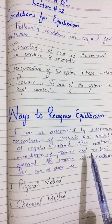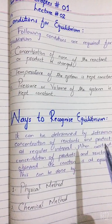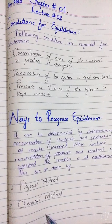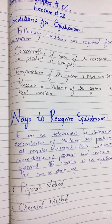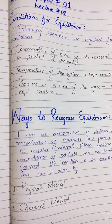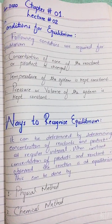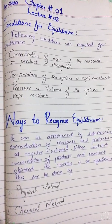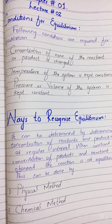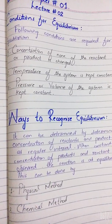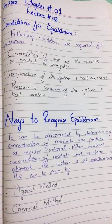In the physical method, there is spectrophotometry — you measure the absorption of the reactants and products. In the chemical method, there is titration of the reactants and products, but that is not included in your syllabus. You must know that you can recognize equilibrium by determining the concentration at regular intervals, by physical method or by chemical method.